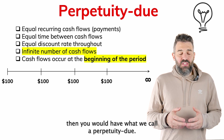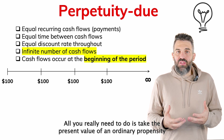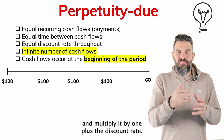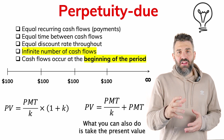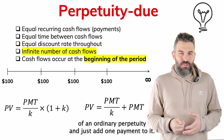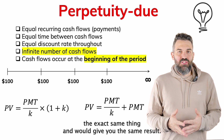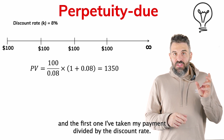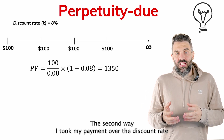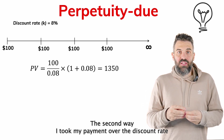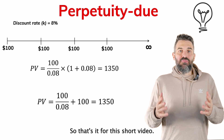If the payments were taking place at the beginning of the period, then you would have what we call a perpetuity due. Similarly to annuities, all you need to do is take the present value of an ordinary perpetuity and multiply it by one plus the discount rate. You can also take the present value of an ordinary perpetuity and just add one payment to it. As you can see on the screen, I've done it both ways: the first takes payment divided by discount rate multiplied by (1 + discount rate); the second takes payment over discount rate and adds one payment. Both give $1,350.